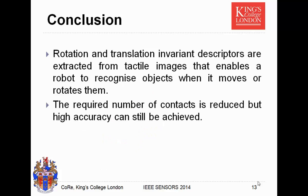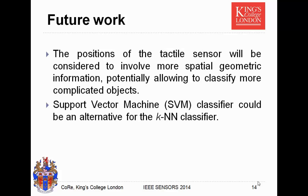In conclusion, we obtain rotation and translation invariant descriptors extracted from tactile images that enable a robot to recognize objects when it moves or rotates them. Second, the required number of contacts is reduced, but high accuracy can still be achieved. For future work, the positions of the tactile sensor will be considered to incorporate more spatial geometric information, allowing classification of more complicated objects. Additionally, a support vector machine classifier could be used as an alternative to the KNN classifier.